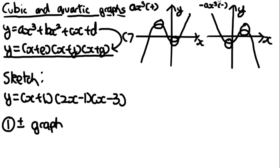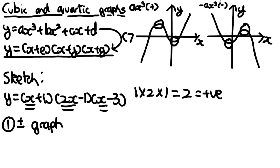To find the sign of the coefficient of x³ from the factored form, multiply all the coefficients of x together. For y = (x + 1)(2x − 1)(x − 3), that's 1 × 2 × 1 = 2, which is positive — so this is a positive graph.